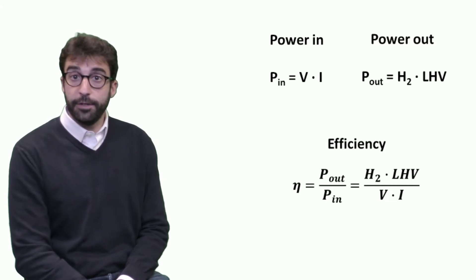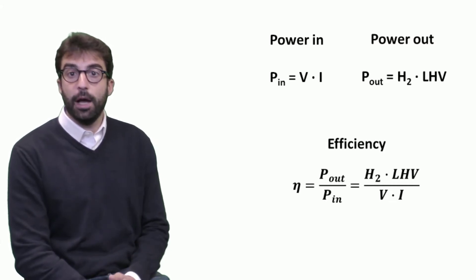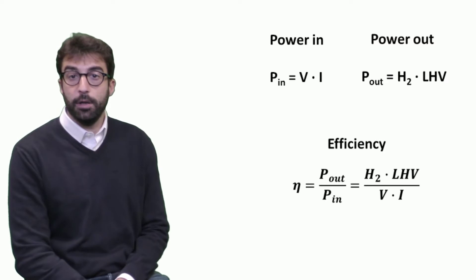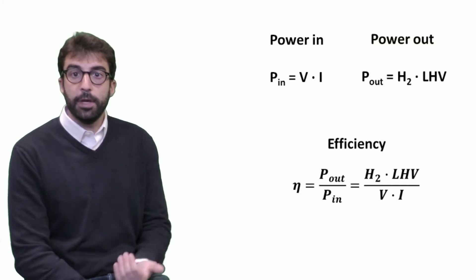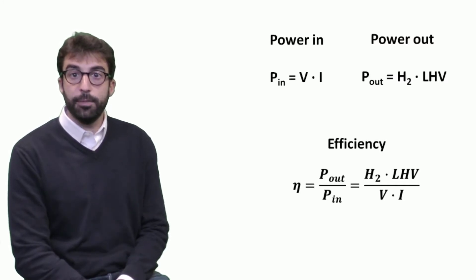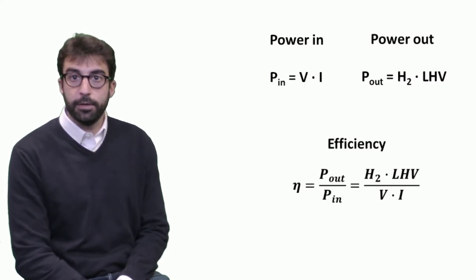Efficiency can be calculated as the ratio between outlet power and inlet power, which can also be evaluated at the energy level. It is the ratio between the hydrogen flow multiplied by the lower heating value and the voltage multiplied by current as the inlet power.